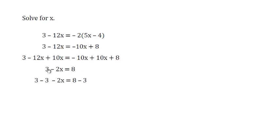Now we need to move the 3 over to the right hand side so we'll subtract 3 from both sides. The 3 subtract 3 is 0 leaving us with minus 2x on the left and 8 subtract 3 is 5.